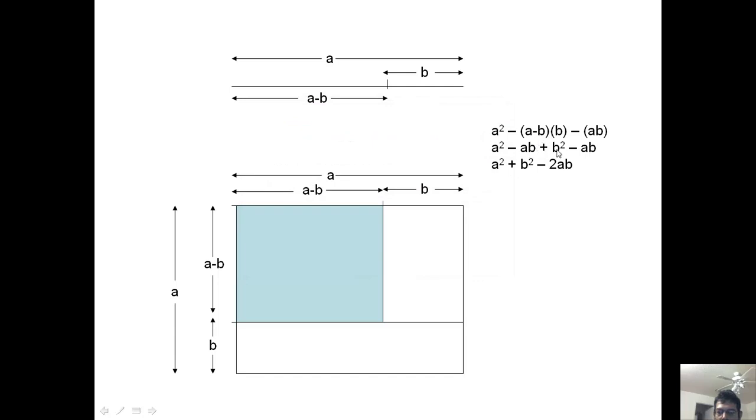A square minus a b plus b square minus a b. So that is a square plus b square minus 2 a b. That's the formula.